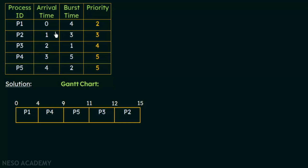P1 is continuing its execution. At 1 millisecond, P2 arrives with a priority of 3, which is higher than P1's priority of 2. But P1 will not be preempted because this is non-preemptive scheduling. At 2 milliseconds, P3 also arrives; at 3 milliseconds, P4 arrives; and at 4 milliseconds, P5 also arrives. So when P1 was executing from 0 to 4 milliseconds, all the other processes arrived. Their priorities are: P2 has 3, P3 has 4, and P4 and P5 both have 5 — all higher than P1's priority of 2. But even then, P1 will not be disturbed.